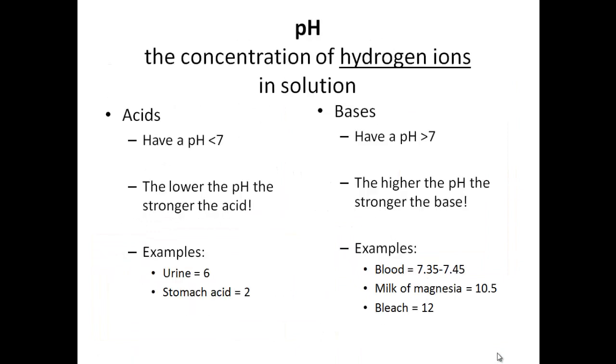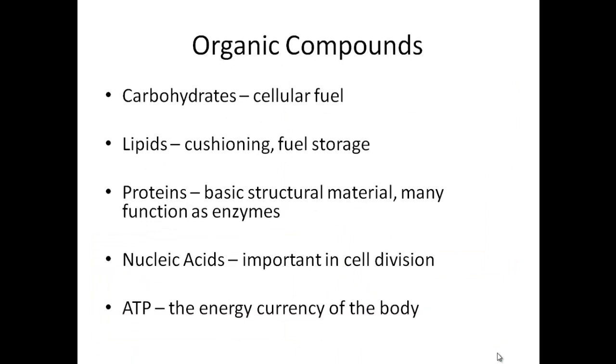Moving on to organic compounds. Organic compounds are any molecule that contains carbon. So these are compounds, molecules that we find in living things. Five major classes we need to be aware of are the carbohydrates, lipids, proteins, nucleic acids, and ATP.